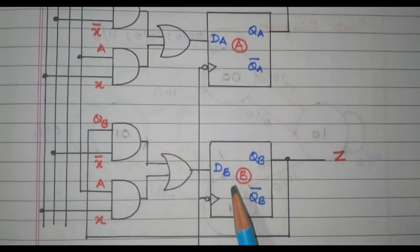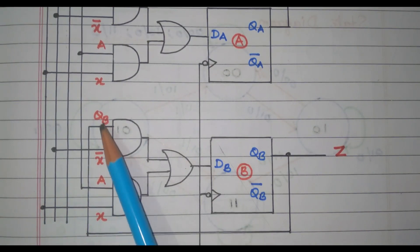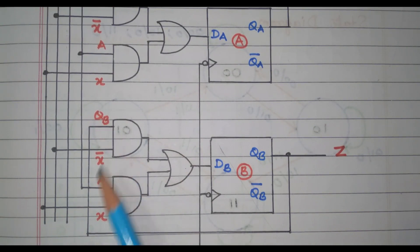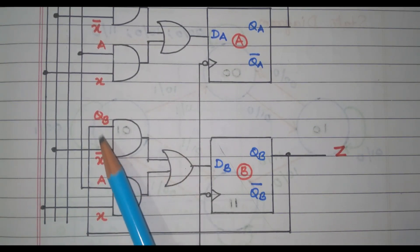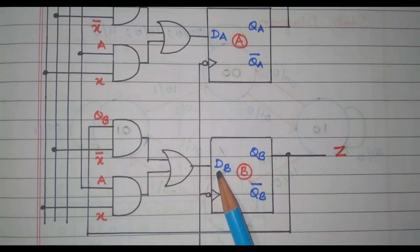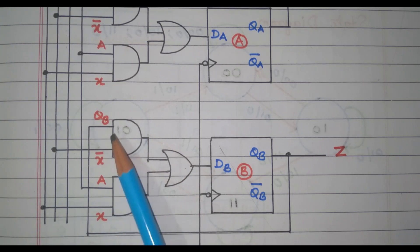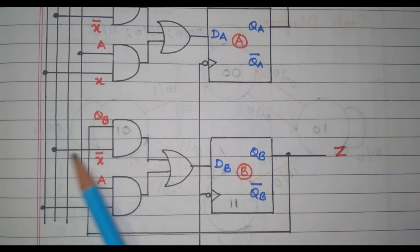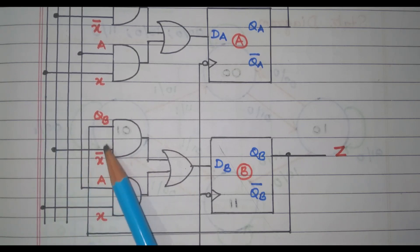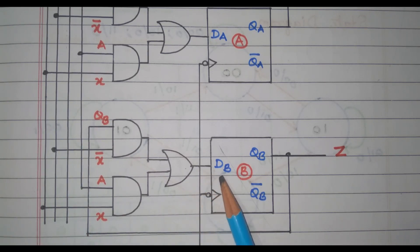Similarly, DB is nothing but X-bar into QB plus X into A. So these two are multiplied, these two are multiplied, then added by this OR gate. So X-bar·QB plus X·A is given as DB. We have all the terms available — X-bar, A, X — everything is available. The corresponding lines are connected together so that we got the required input given to DB also.